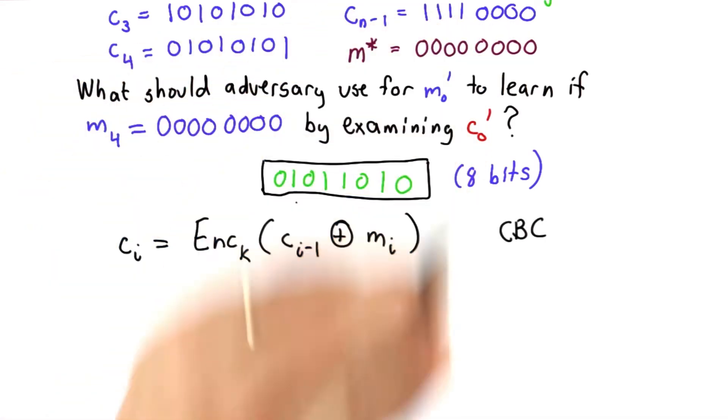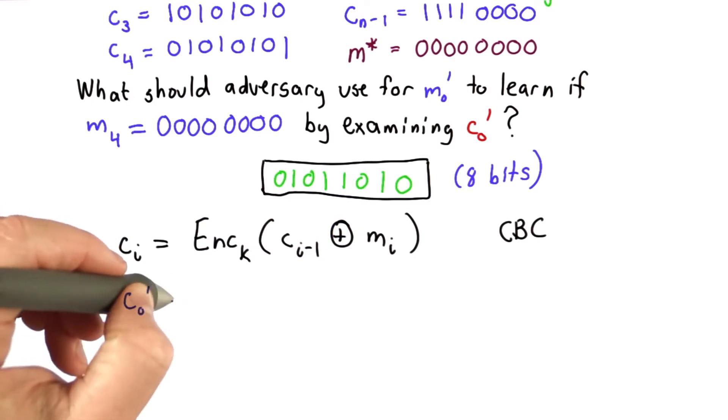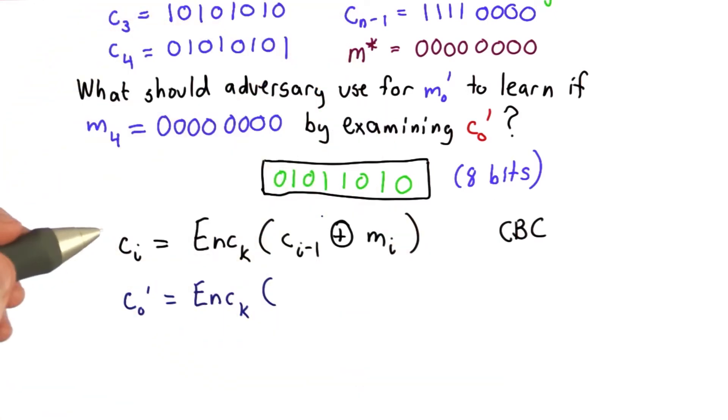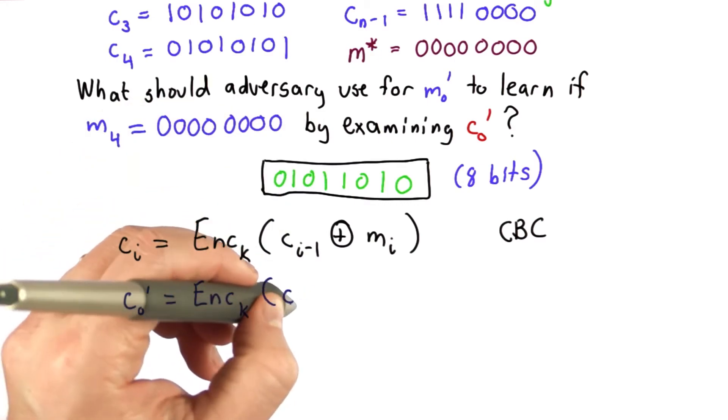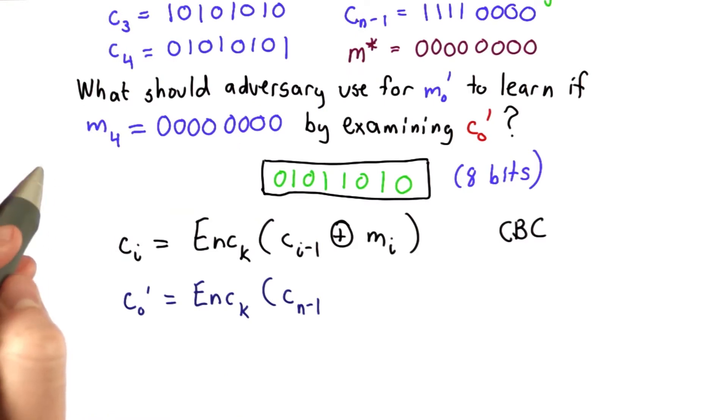For the first block of the second message, that's going to be C0' as the result of encrypting the value of the previous block, and this was the initialization vector for the first block. For this one, it's the last block in the previous message. So that was the block we called cn-1, and that's xord with message block 0.